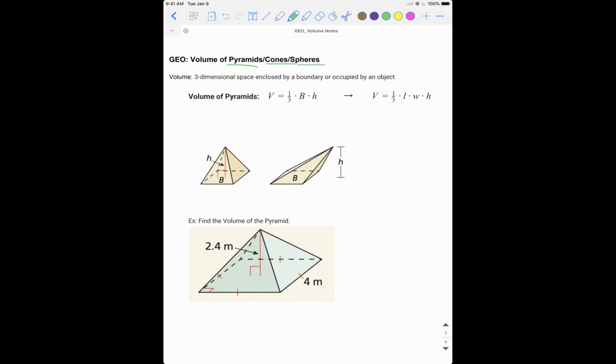Just to refresh, volume has to do with three-dimensional shapes. It's the amount of space that gets enclosed by that shape. If we think of a box, it's the amount of space that is in that box. You have length, you have width, and you have height when you talk about volume. That's why we talk about three dimensions: length, width, and height.